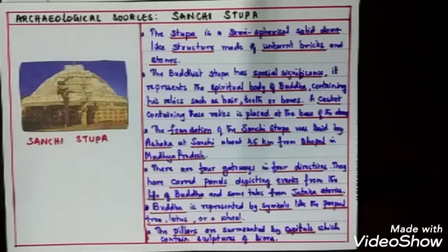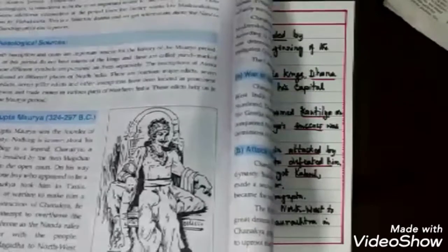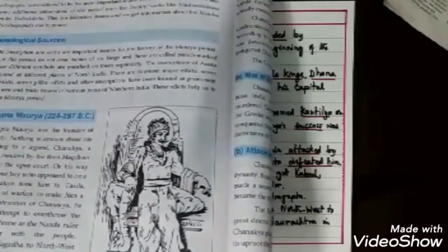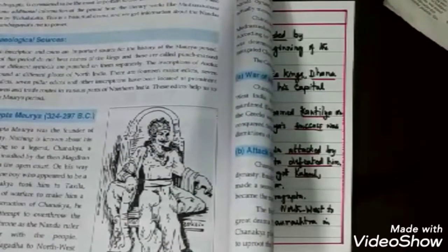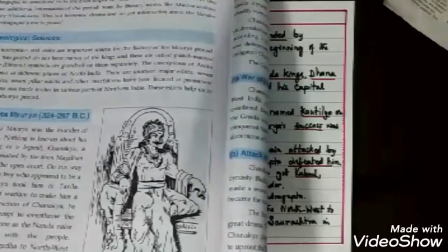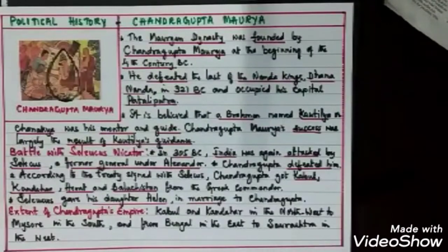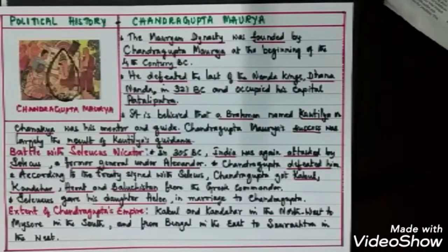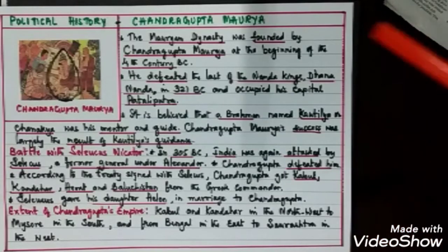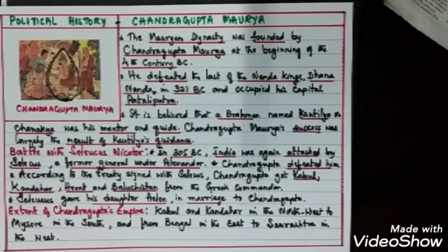Next we move to the political history — the main rulers of the Mauryan Empire. Chandragupta Maurya was the founder of the Mauryan Empire. He founded the Mauryan dynasty at the beginning of the 4th century BC, around 321 BC. He established the empire by defeating the Nanda kings — the last Nanda ruler was Dhana Nanda — and occupied his capital Pataliputra.